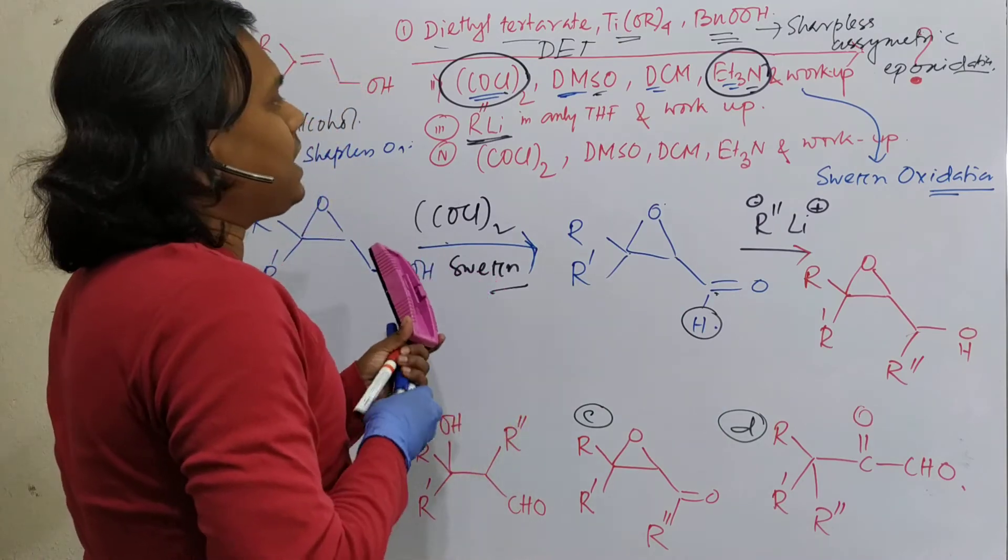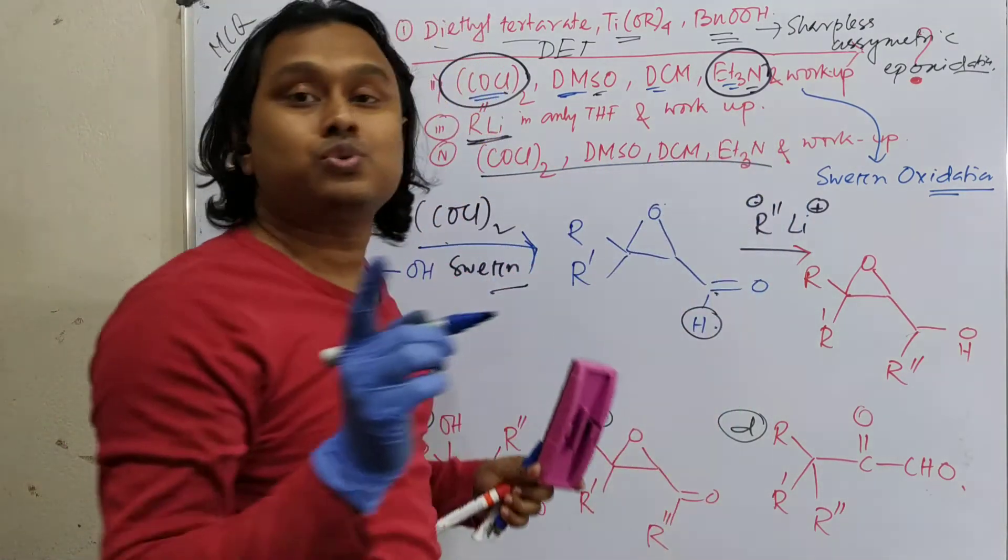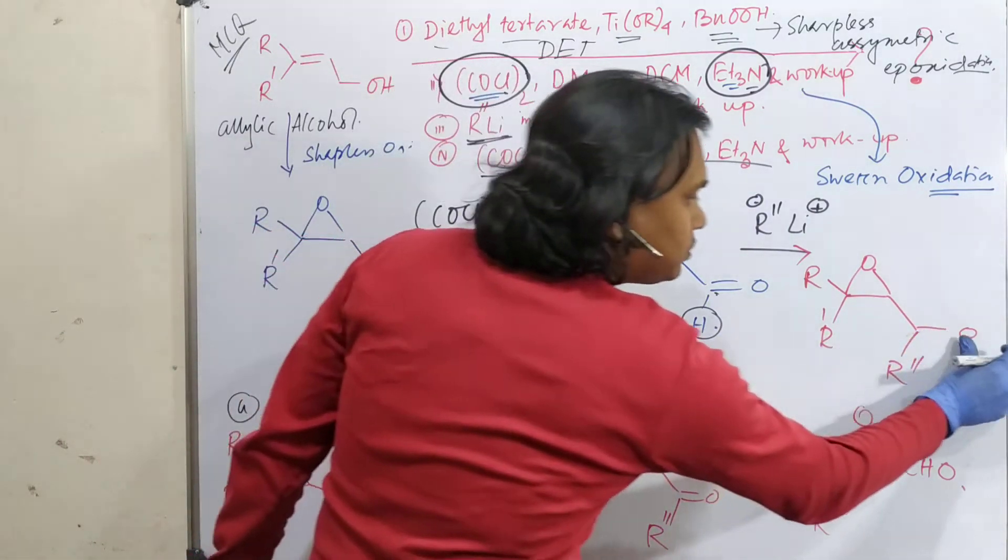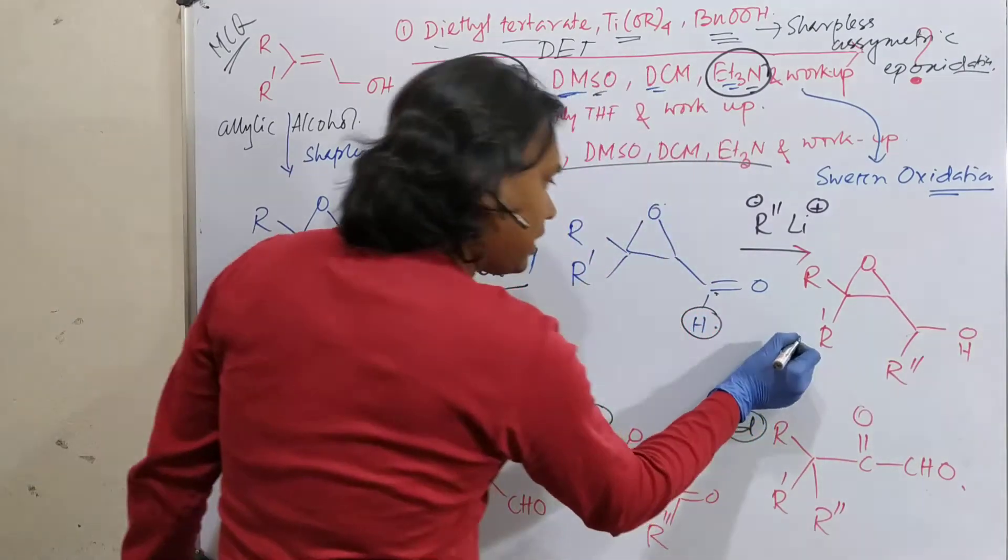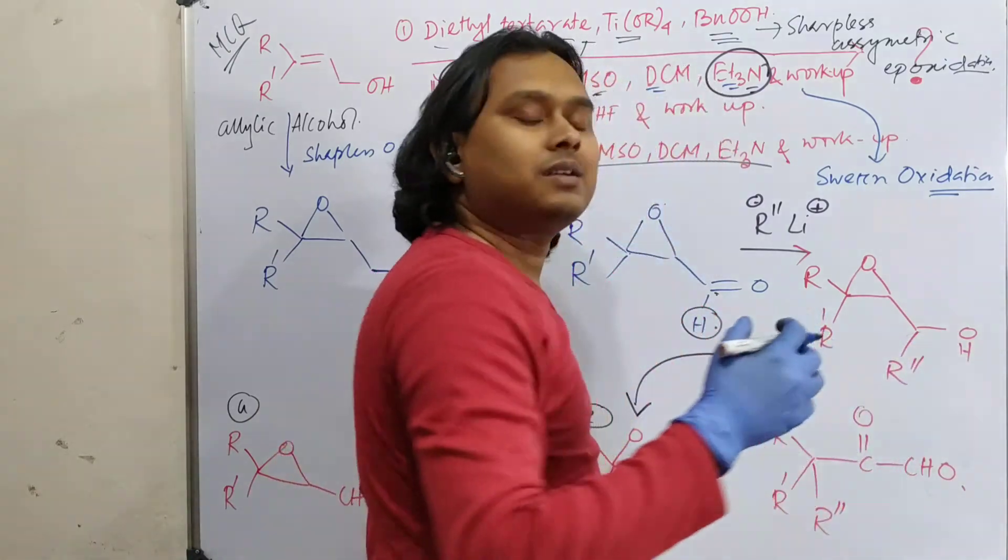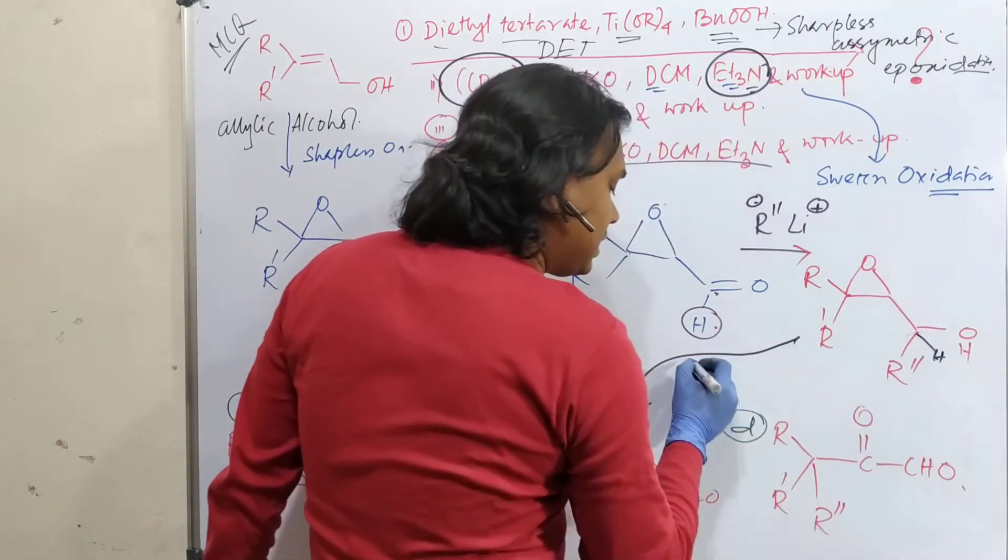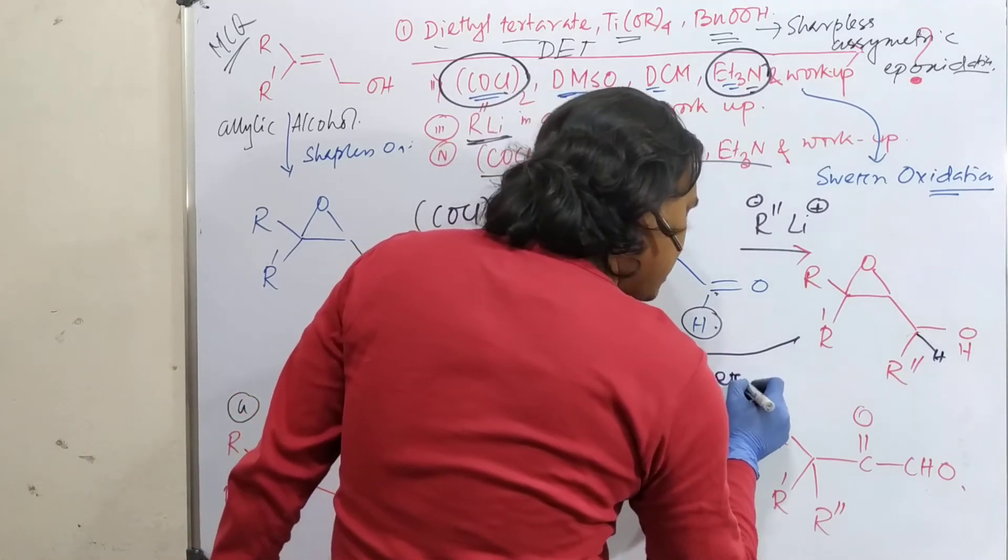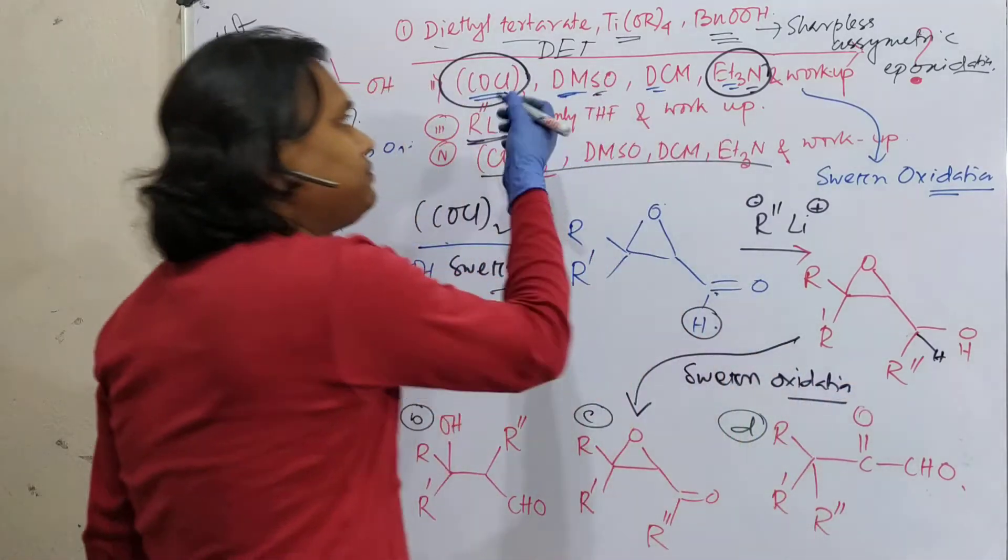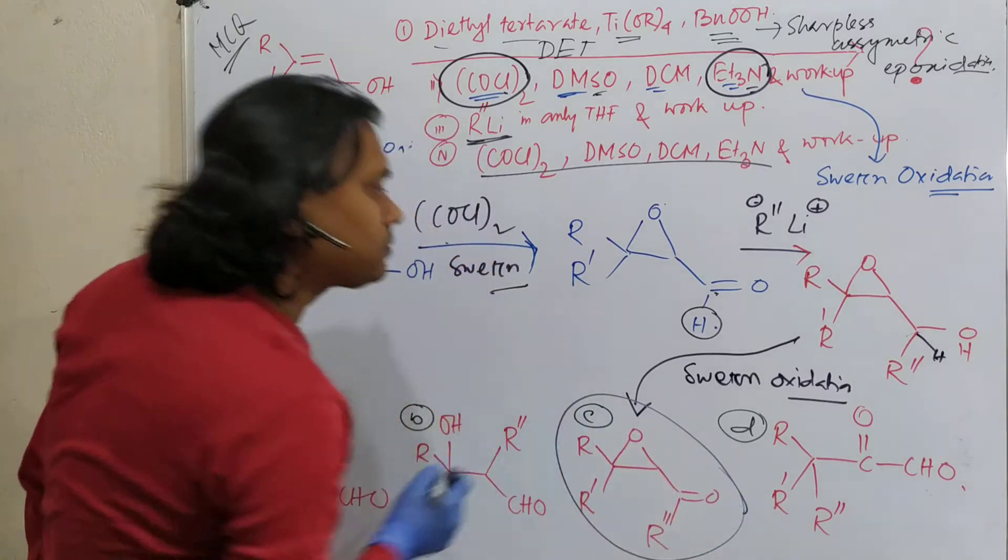Now, in the last step, see, last step is again, Swern oxidation. Means same step I have given, so you do not need to be worried. So what is this aldehyde? In last step will be converted into the corresponding this. Oxidation means this alcohol will be converted into carbonyl group, and since it is a secondary alcohol, it will be converted into ketone. And Swern oxidation is a selective oxidation. And again, why epoxide will survive, just I have explained previously, so no need to be worried about. So answer of the problem is this one.